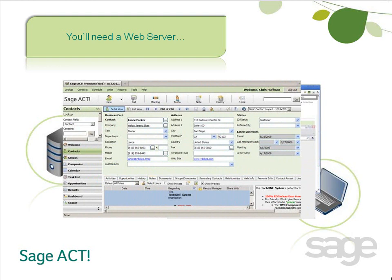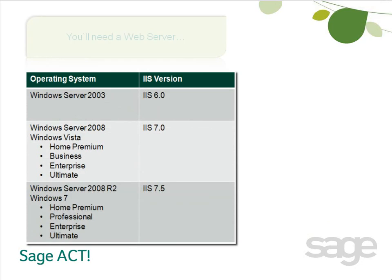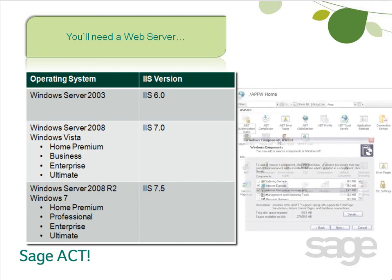Not sure if you have a web server? The good news is that every Windows operating system on the Sajak Premium compatibility list includes a web server service called Internet Information Services, or IIS. It may already be installed, but if not, it'll be installed for you when you install Sajak Premium Access via Web.